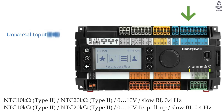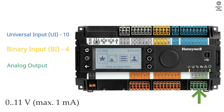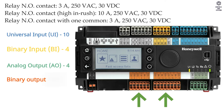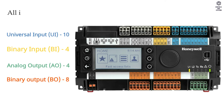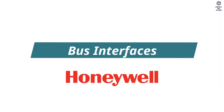Inputs and outputs: universal input is 10, binary input is 4, analog output is 4, binary output is 8. All inputs and outputs have a maximum cable length of 366 meters.